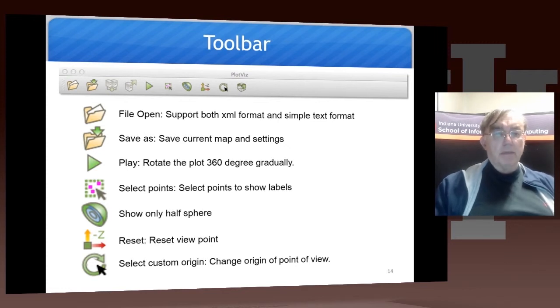You can do a play, which is this thing here. That rotates the plot gradually. You can do the select points by this select button here to show the labels. That's the fastest one of the labels.